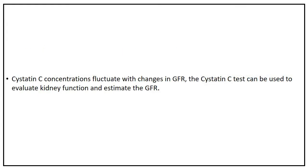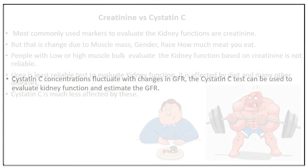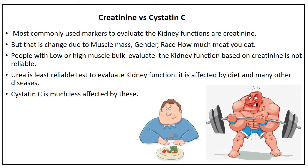Because Cystatin C concentrations fluctuate with changes in GFR, the Cystatin C test can be used to evaluate kidney function and estimate the GFR. The most commonly used marker to evaluate kidney function is creatinine, but that is affected by muscle mass, gender, race, and how much meat you eat. In people with low or high muscle bulk, evaluating kidney function based on creatinine is not reliable. Urea is the least reliable test to evaluate kidney function, as it is affected by diet and many other diseases, but Cystatin C is much less affected by these factors.